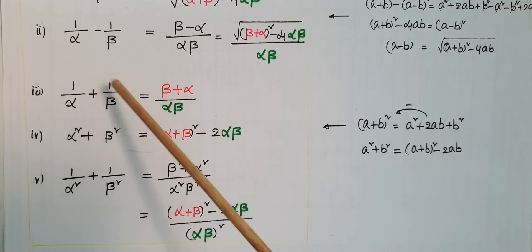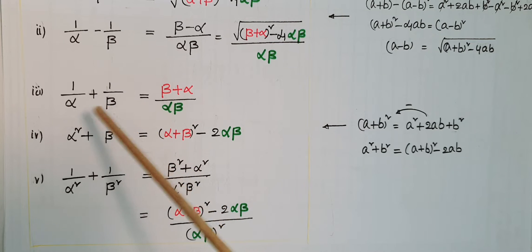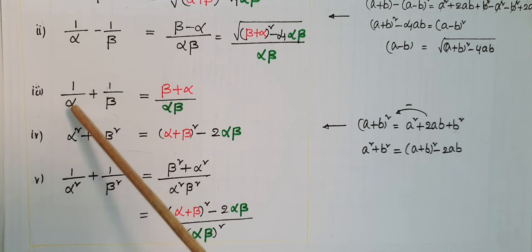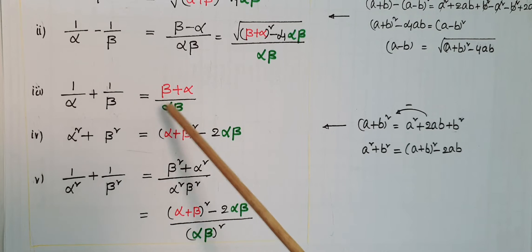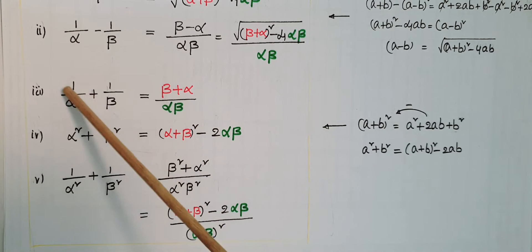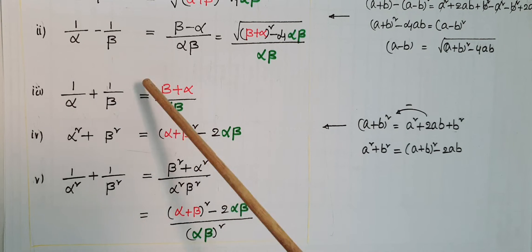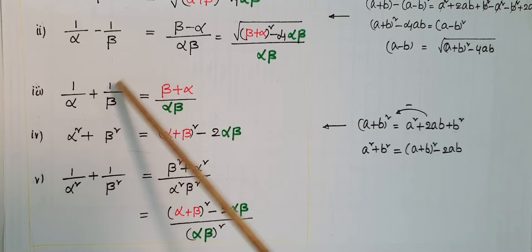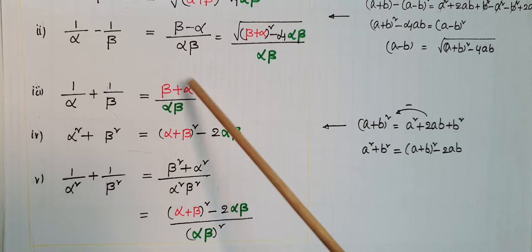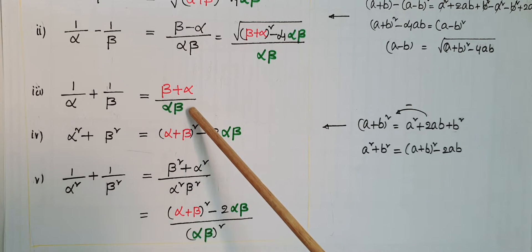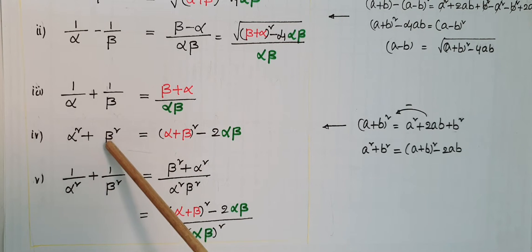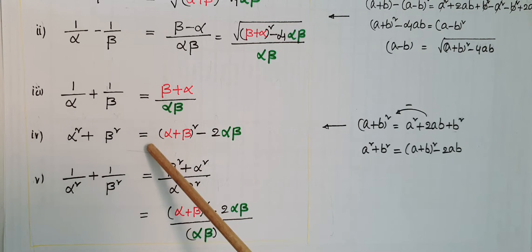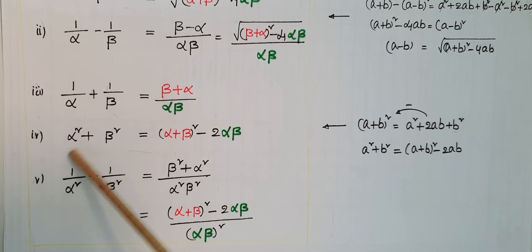Next, 1/α plus 1/β: take the LCM of alpha and beta, that is alpha·beta. In the numerator, beta plus alpha, so the result is (beta plus alpha) by alpha·beta, which equals (alpha plus beta) by alpha·beta.